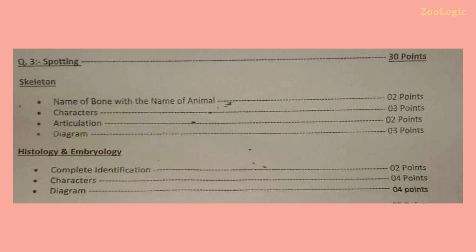For each skeleton spot you must write down three characteristics of that bone, its articulation — meaning which bone it is joined with — and draw a rough diagram labeling two to three parts. Since you don't have much time during spotting, keep diagrams brief. The third spot from histology or embryology requires complete identification, its characteristics, a basic sketch, and labeling of major parts.